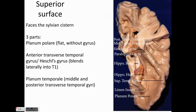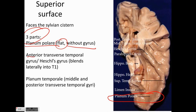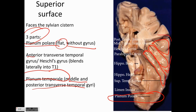Coming to the superior surface of the temporal lobe, it has three parts: the planum polare, which is flat and without any gyrus; then the anterior transverse temporal gyrus or Heschl's gyrus, which blends into the superior temporal gyrus (T1) and is concerned with hearing; and then the planum temporale, in which we have the middle and posterior transverse temporal gyri. Heschl's gyrus is the anterior transverse temporal gyrus, and posteriorly in the planum temporale we have the middle and posterior transverse temporal gyri.